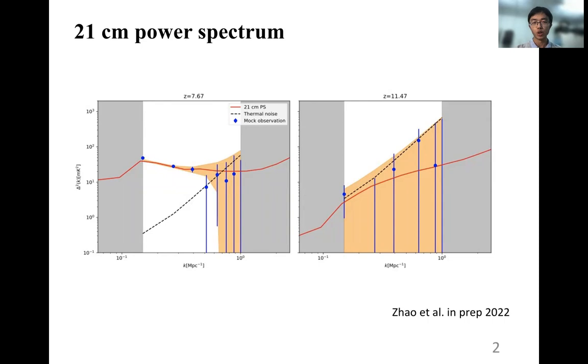Here we show an example of the 21cm power spectrum at two redshifts. The red lines are the cosmological 21cm power spectrum from the 21cmFAST simulation, with the shaded orange regions around it representing the total noise power spectrum, including the contributions from thermal noise and the sample variance errors, assuming measurements with the HERA telescope. The black lines show the thermal noise which dominates over the sample variance errors, and the blue dots are the mock observation power spectrum with error bars representing the total noise.